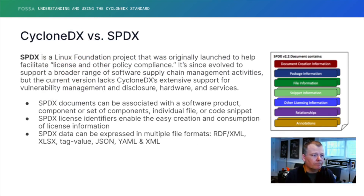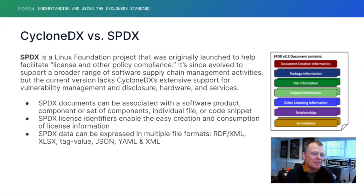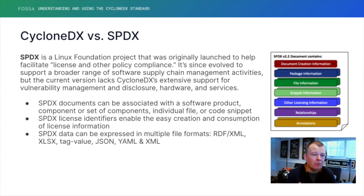This is kind of the structure of an SPDX document. They have a version 2.3 of this — the 2.2 one is more colorful than the 2.3 one, which is why the 2.2 is still shown here. Not a lot has changed in the 2.3 diagram anyway. They capture package information, file information, and snippet — which is something that CycloneDX doesn't support yet, although our snippet support is going to be very different from what SPDX does because we have entirely different use cases.